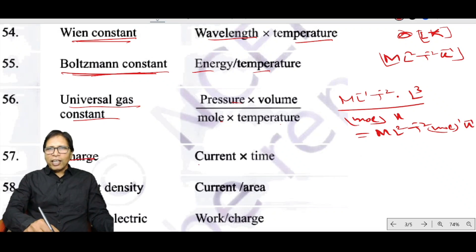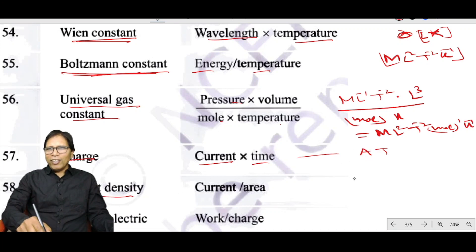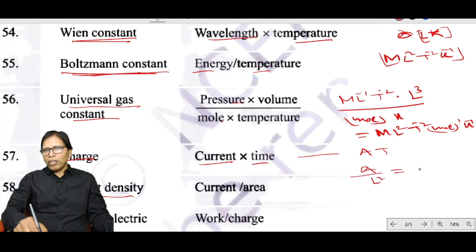Charge equals current × time, so its dimension is AT. Current density equals current divided by area: A ÷ L² = AL⁻².